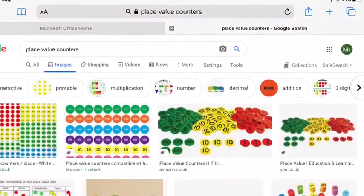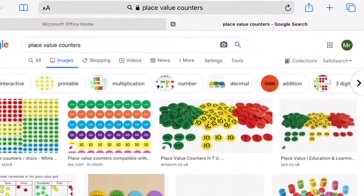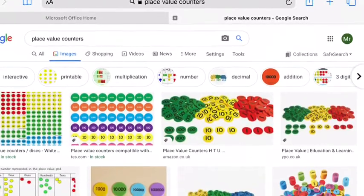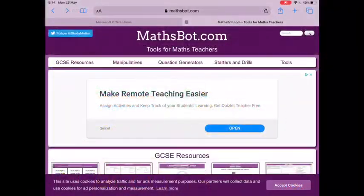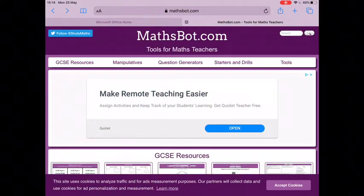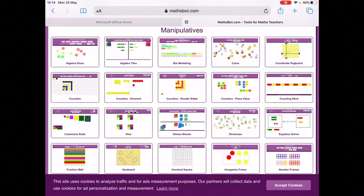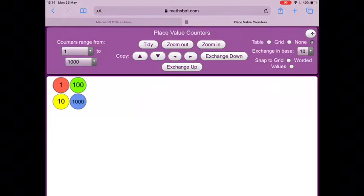You can easily make your own place value counters using paper and some scissors and some pens, or you can print some off. If you just search on Google, you'll find lots of options. Or if you would rather use something online, go to mathsbot.com, click manipulatives and select place value counters.